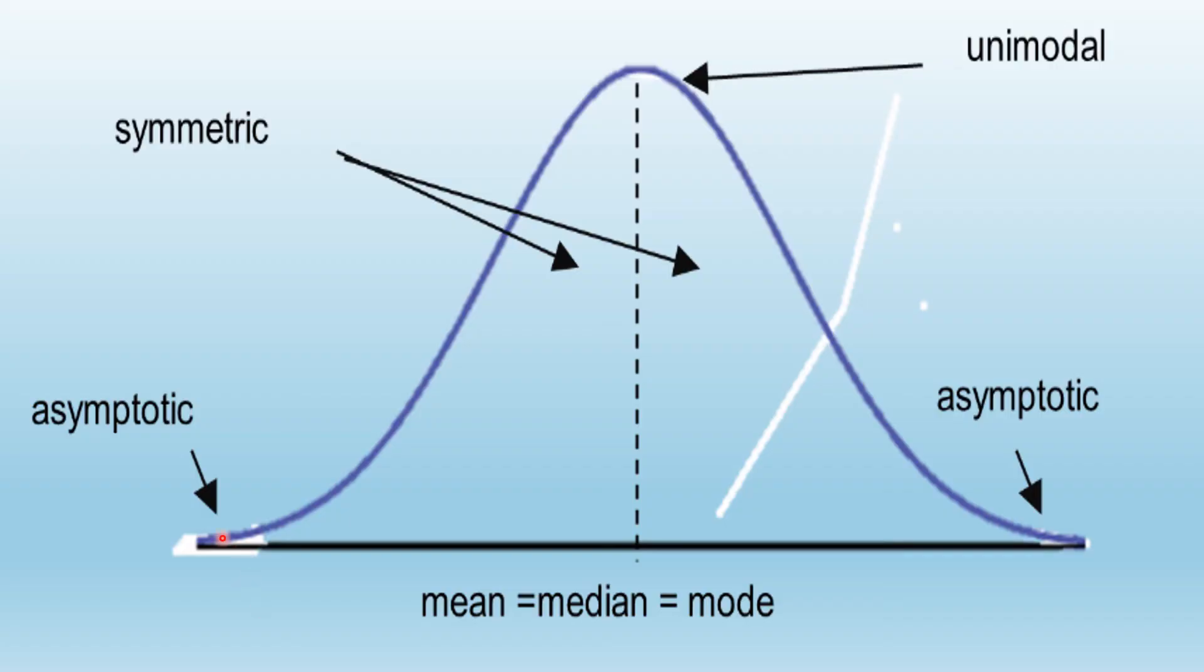Based on the sixth characteristic, the area under this curve and above the horizontal axis is equal to 1.